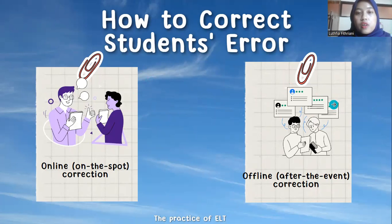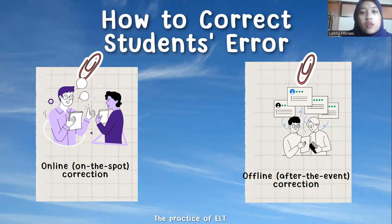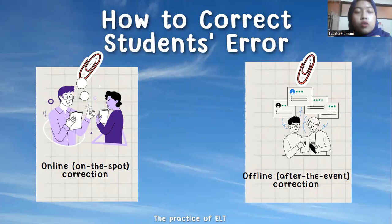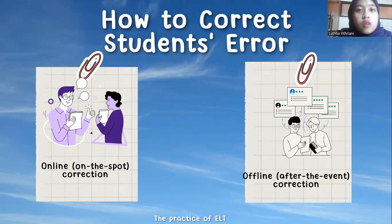After-the-event correction is a technique in which the teacher lets the student make mistakes during the teaching and learning process. During the process, the teacher should make a note of the students' errors. Then at the end of the teaching and learning process, the teacher will explain about the student errors along with the correction.